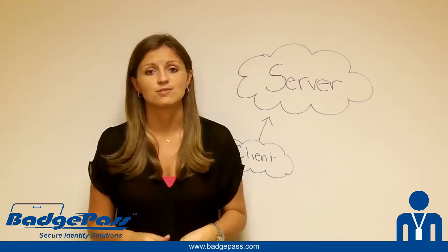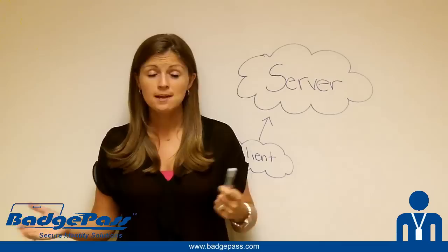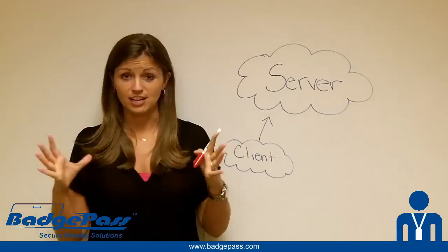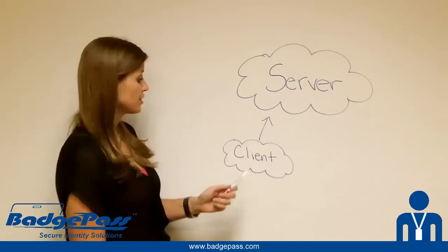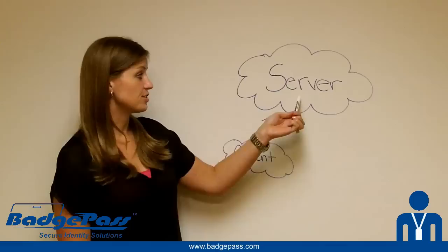The simplest answer is that Smart Reg server offers a centralized way of storing profiles. When you've got a server version of Smart Reg, you install Smart Reg server on a centralized server at your customer's location, then install the client or device licenses on each individual PC where you're registering people. Every time a client starts up, it looks to the server and acquires profiles from the central server.